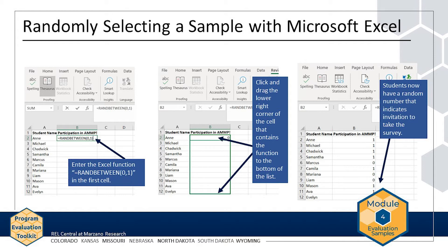Let's say that the AMP evaluation team wants to use Excel to randomly select students to complete a survey. First, the team decides that 0 means that a student will not receive the survey, and 1 means that a student will be invited to take the survey. Next, the team enters the function =RAND(0,1) in the column next to the students' names. The team then clicks the lower right corner of the cell and drags it to the bottom of the list, triggering Excel to randomly select either 0 or 1 for each student. The team finally has a randomly generated list of individuals who will or will not be invited to take the survey.